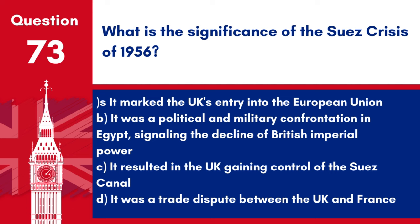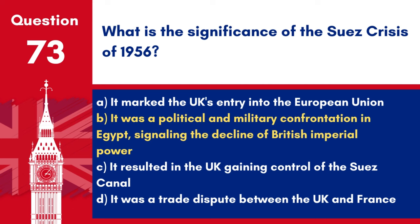Question 73. What is the significance of the Suez Crisis of 1956? A. It marked the UK's entry into the European Union. B. It was a political and military confrontation in Egypt, signalling the decline of British imperial power. C. It resulted in the UK gaining control of the Suez Canal. D. It was a trade dispute between the UK and France. Answer: B. It was a political and military confrontation in Egypt, signalling the decline of British imperial power. The Suez Crisis of 1956 is significant as it marked a turning point in the history of British imperial power.